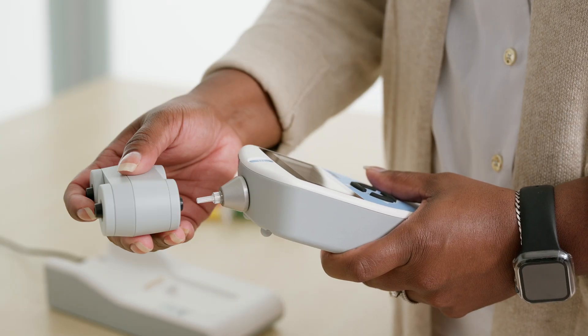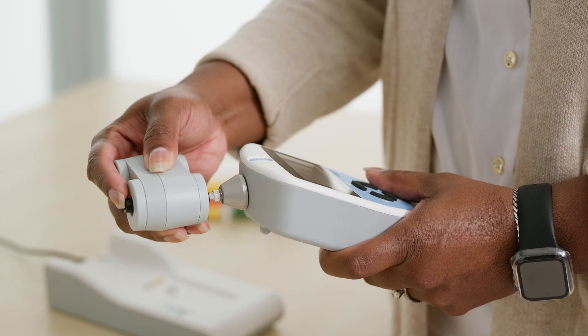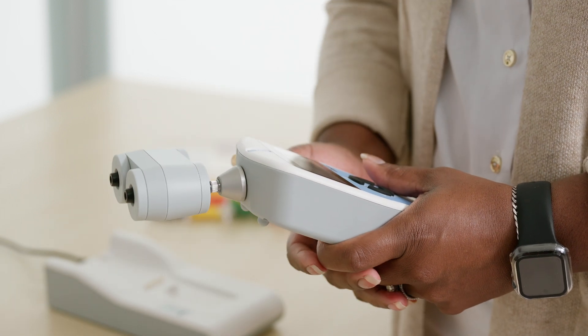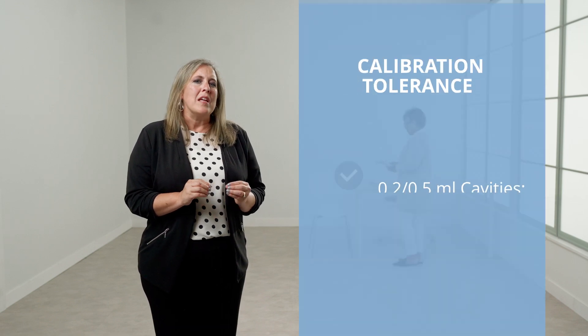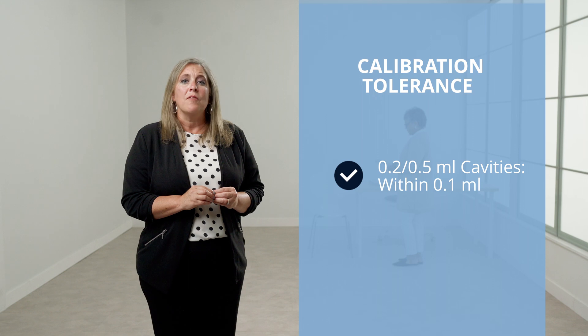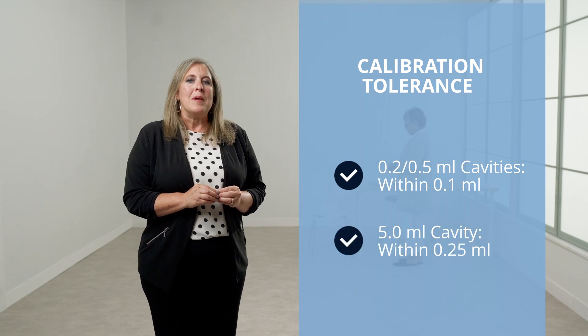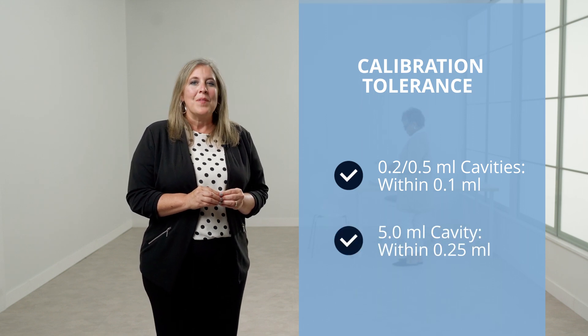When the message Insert Probe is displayed on the screen, insert the probe without an ear tip into the 2 mL test cavity. Make sure that the probe is inserted until it is flush with the cavity casing. The display should indicate the volume measured and should be at or within 0.1 mL of 2 mL. Repeat this with the other test cavities. When the checks are complete, press the left arrow to return to the main menu.